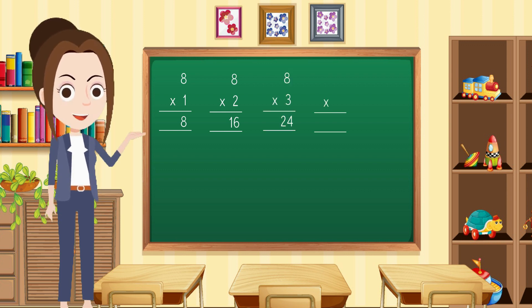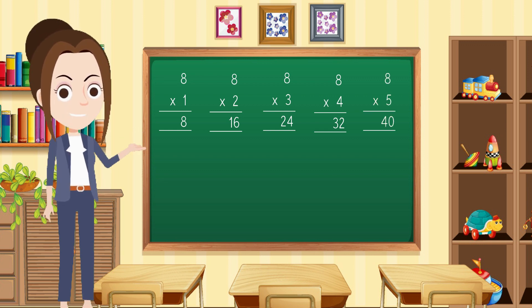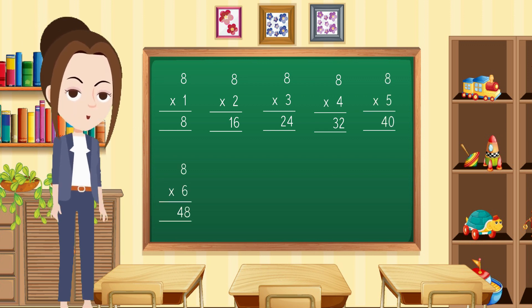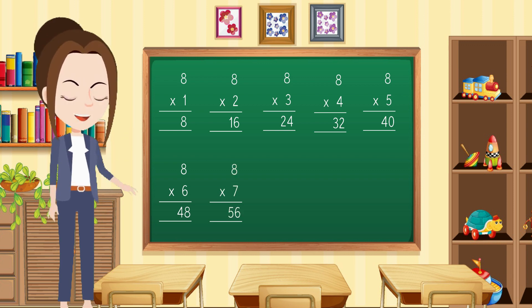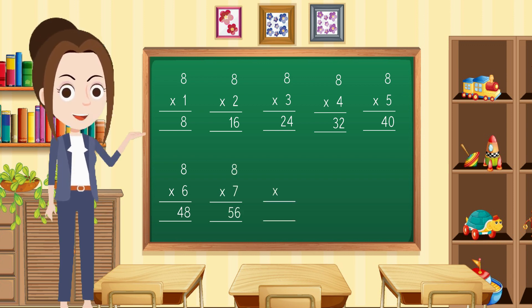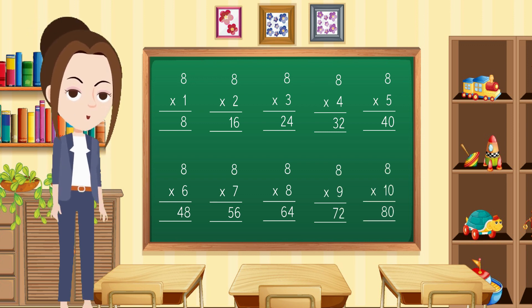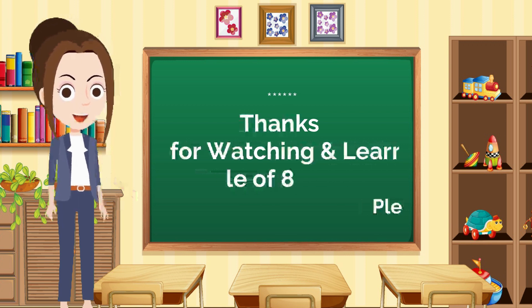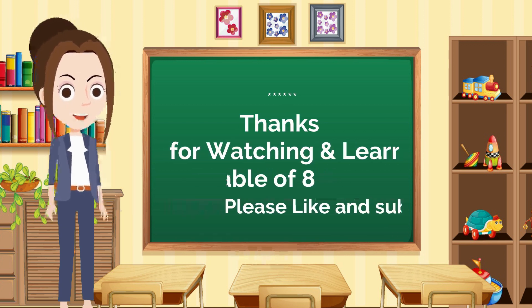8×4=32, 8×5=40, 8×6=48, 8×7=56, 8×8=64, 8×9=72, 8×10=80. Hope you enjoy learning the table of 8 with me. Take care, bye!